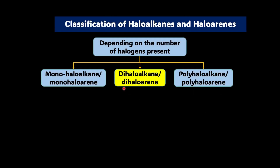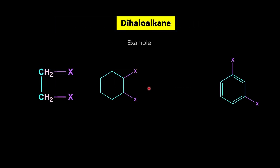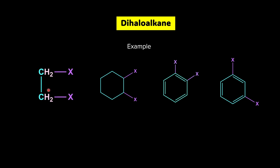Now let's talk about dihaloalkane and dihaloarene — we should have two halogens. Here, to this alkyl chain we have two halogens attached, and notice that these two halogens are on adjacent carbons. Similarly, we have a cyclohexane with two halogens attached on adjacent carbons — this is a dihalo-cycloalkane.